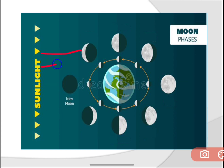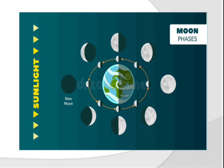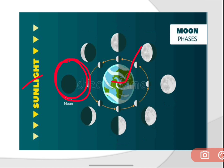So see here — the sunlight is falling here, so only this part we can find. This part is away from the sun, that's why we can't see it. And when this moon comes in between the earth and the sun, we cannot see that moon. That's why it is called new moon or no moon — it is invisible at that time.